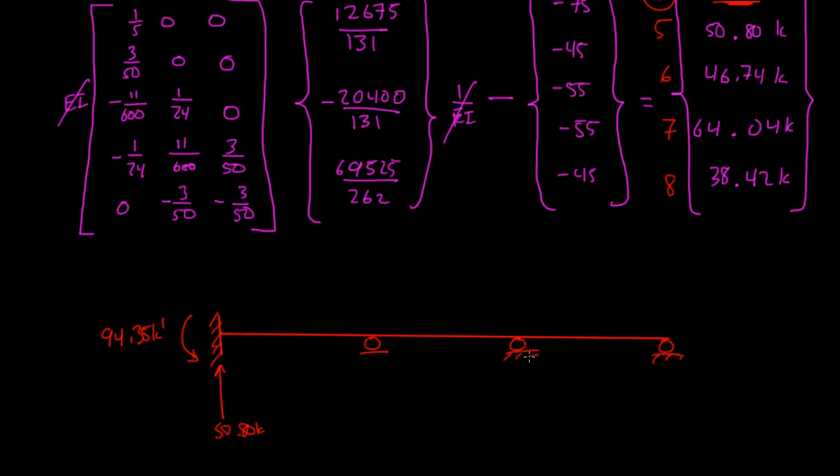Let's go ahead and draw the loading as well. You had a point load here of, I believe, 20 kips. Then you had a distributed load here, a distributed load here, a uniformly distributed load here. They were both 9 kip per foot, 9 kip per foot.